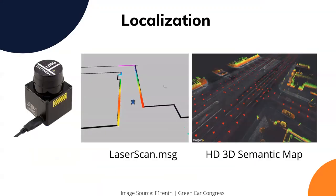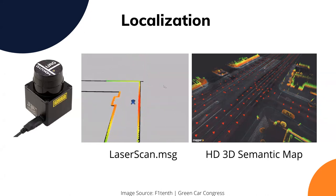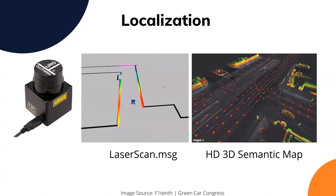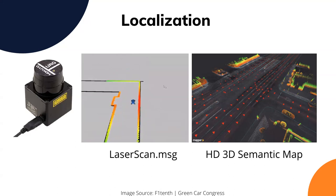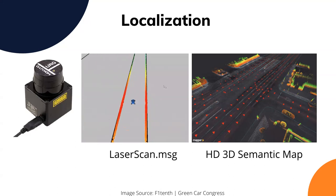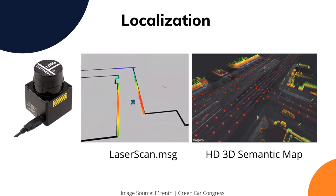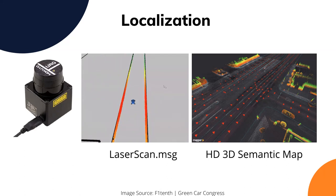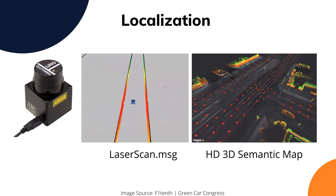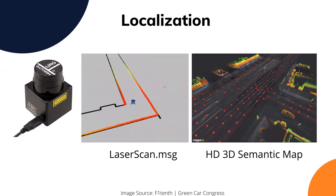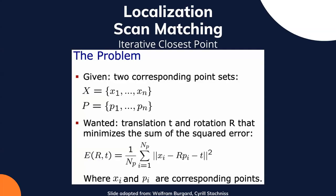We started discussing each of the sub-modules like localization with reference to F1/10, how we use LiDAR point cloud in addition to odometry data to localize ourselves better in the map environment. We also saw that in real autonomous vehicles driven on road by industry, they use HD 3D semantic maps to compare their live point cloud with the semantic 3D map.